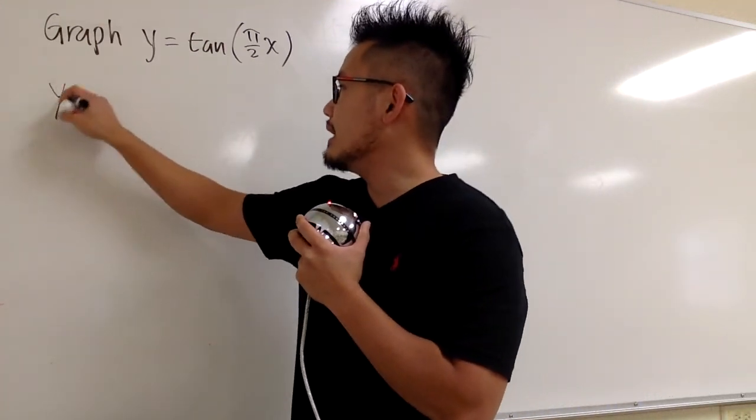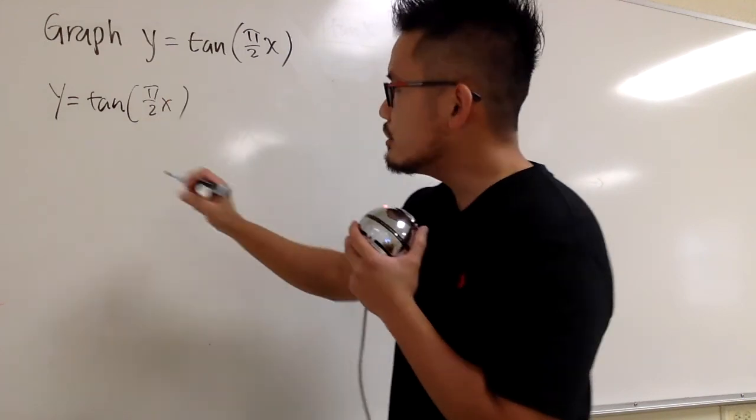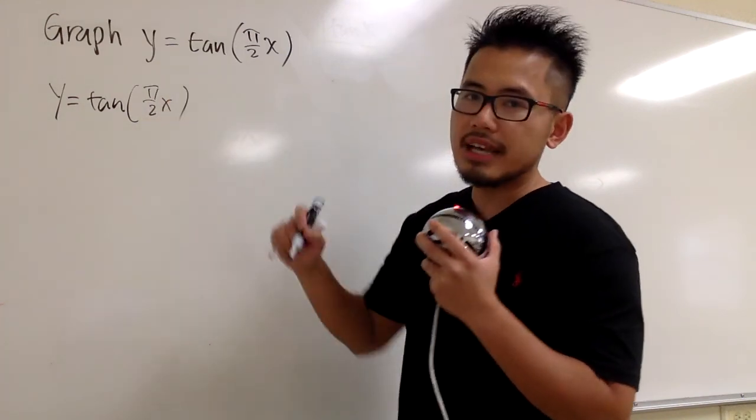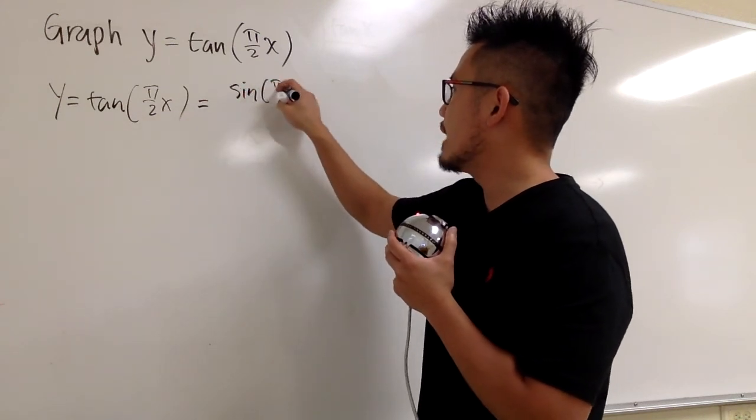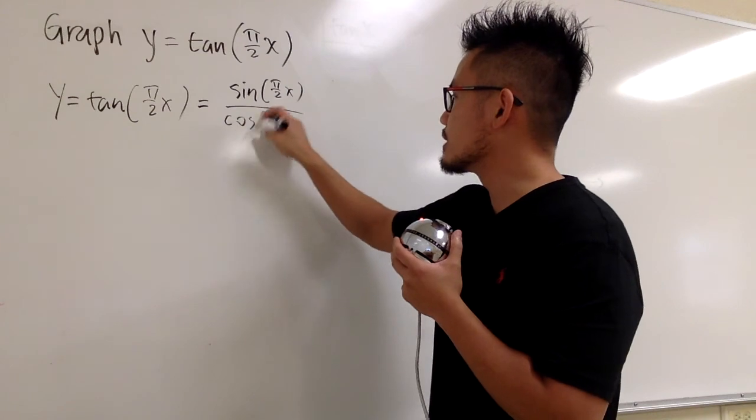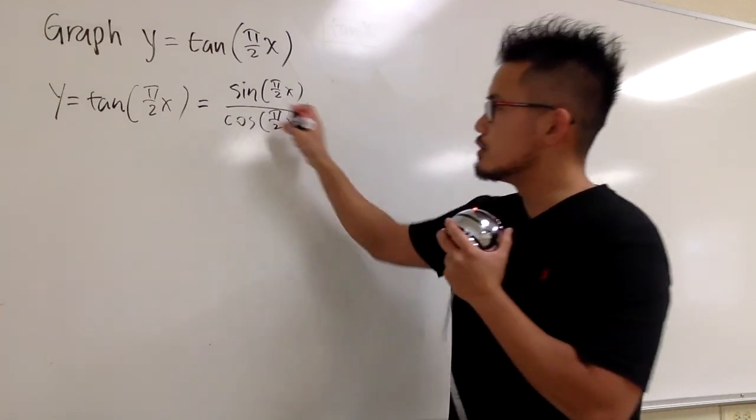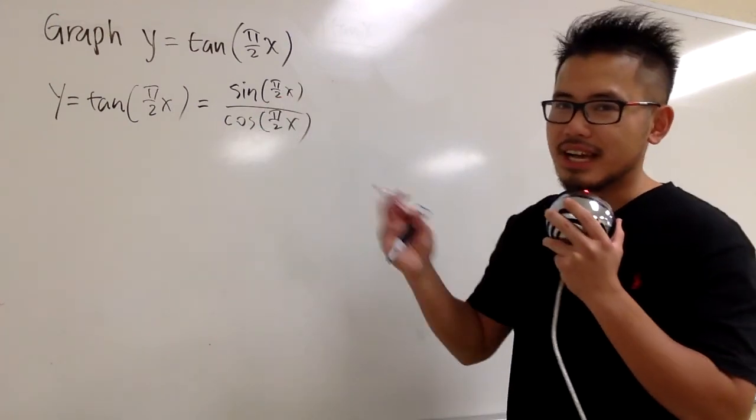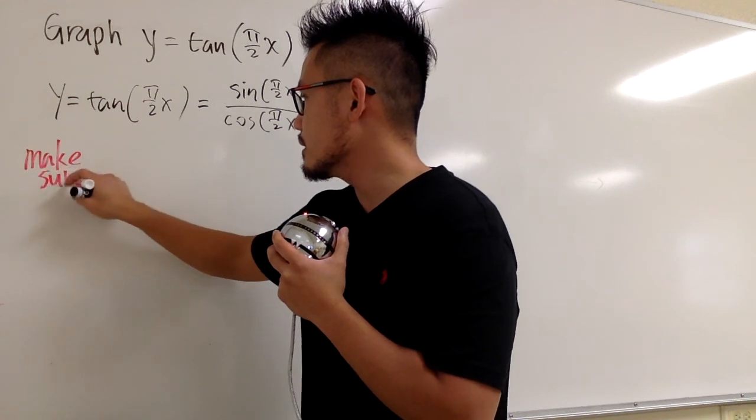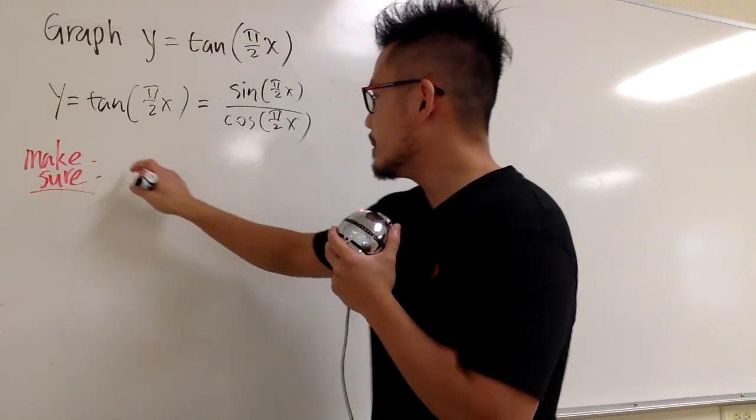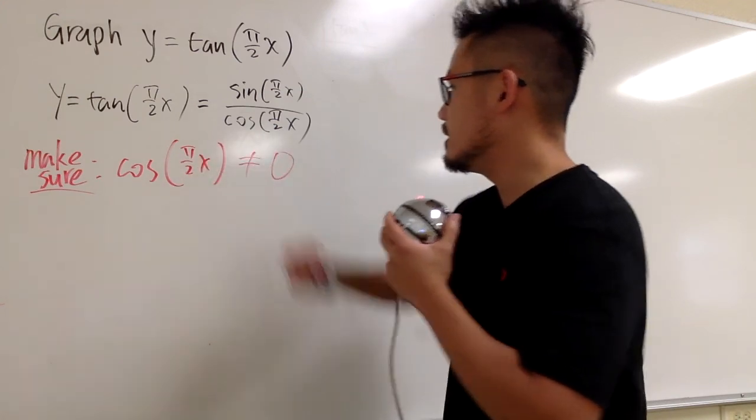You see that y is the same as tangent of pi over 2x, and tangent is sine over cosine, and you keep the inside the same. So this is the same as sine of pi over 2x over cosine of pi over 2x. And for the domain, just like earlier, we have to make sure that the denominator is not equal to zero. So we are going to make sure that the denominator, which is cosine of pi over 2x, cannot be equal to zero.